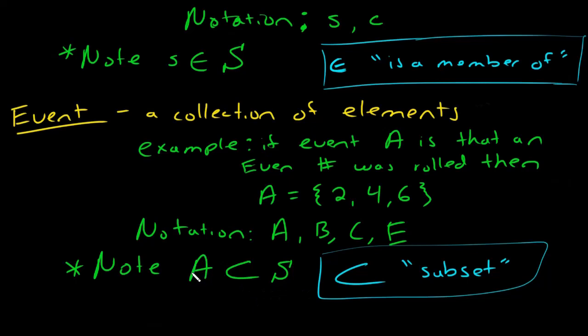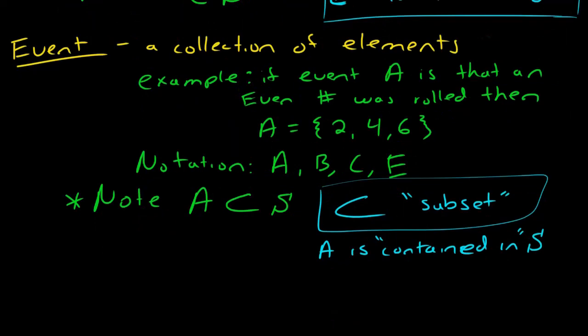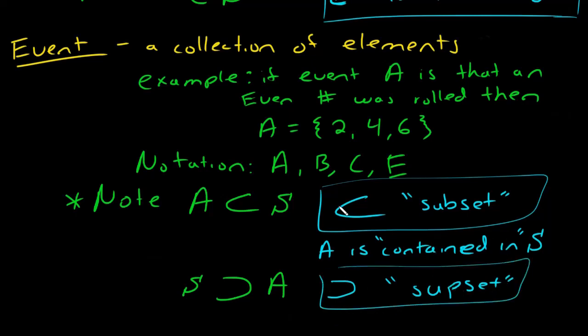So this is another shorthand mathematical notation that you can keep in mind. This sideways U means subset. And what that means is that A is contained in S. These elements are in S. A is contained in the sample space. And the sideways U kind of points to the thing that you're contained in. Because you can write this the other way around. And in this scenario, instead of it being a subset, this is called a supset. It's just the other way around. So it's kind of like it eats the bigger thing, the sideways U eats the bigger thing.